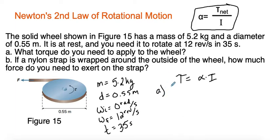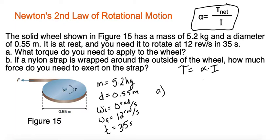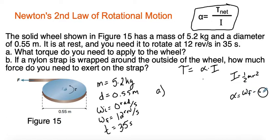Part A asks what torque we need to apply, and Part B asks how much force you'd need to exert on a nylon strap wrapped around the outside of the wheel. To find torque, we need angular acceleration — using the angular velocities and time — and the moment of inertia, using mass and radius. The moment of inertia for a solid disk is one-half mR squared, and angular acceleration is final minus initial angular velocity over time.